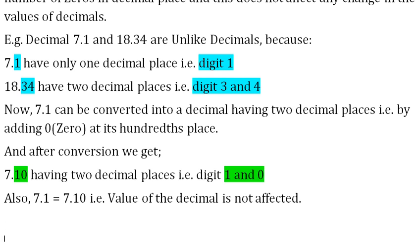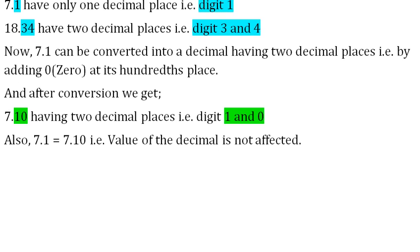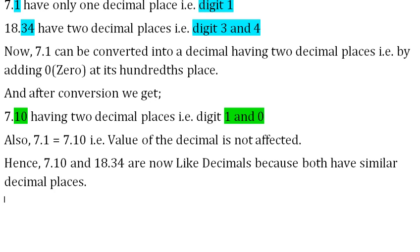Also, 7.1 is equal to 7.10, that is, the value of the decimal is not affected. Hence, 7.10 and 18.34 are now like decimals because both have similar decimal places.